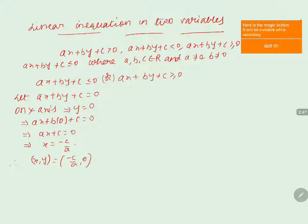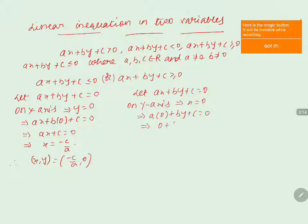Similarly, to find the intercept on the Y axis, we know that on the Y axis X equals 0. Substituting into AX plus BY plus C equals 0 gives A into 0 plus BY plus C equals 0, which simplifies to BY plus C equals 0, so Y equals minus C by B. Therefore the Y intercept is the point 0 comma minus C by B. These are the intersections of the line on the X axis and Y axis respectively.